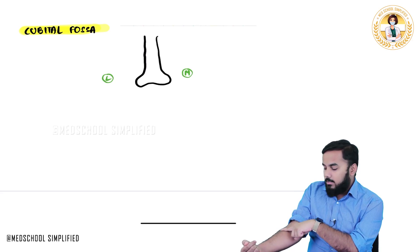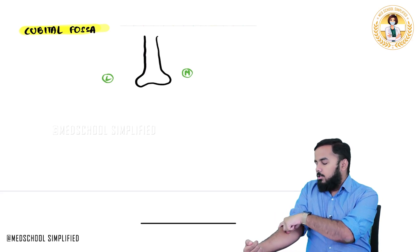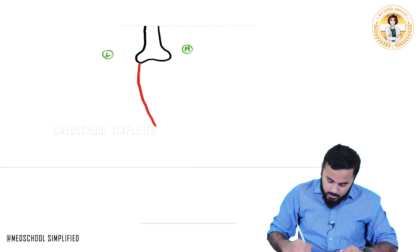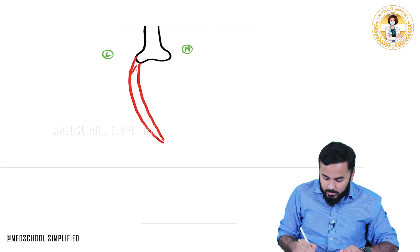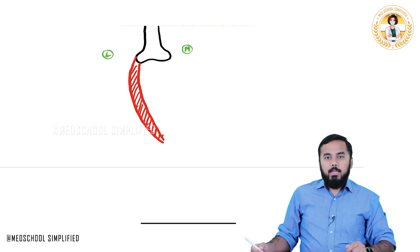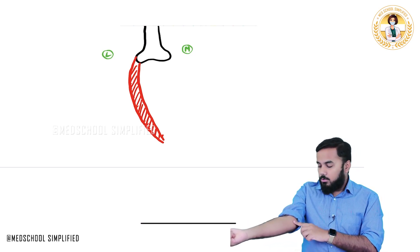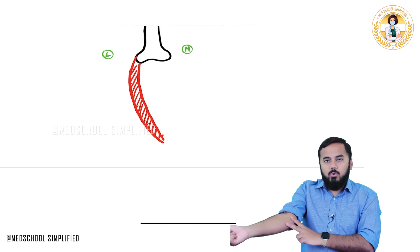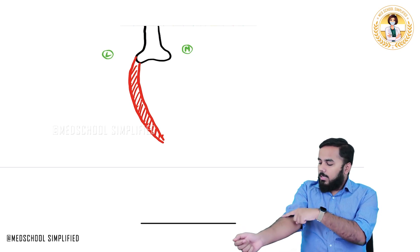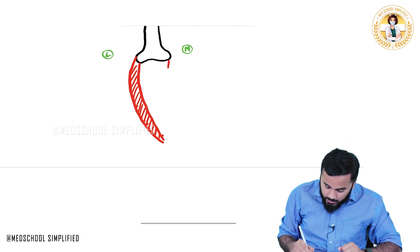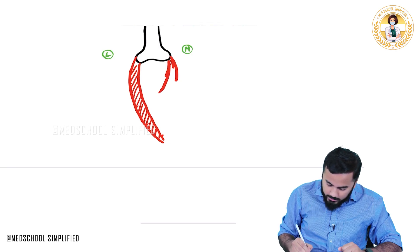There is a muscle emerging from the lateral epicondyle — this big chunk of muscle is called the brachioradialis. From the flexor region, there is also a muscle going like this, which is called the pronator teres. So here I have brachioradialis and here I have pronator teres.